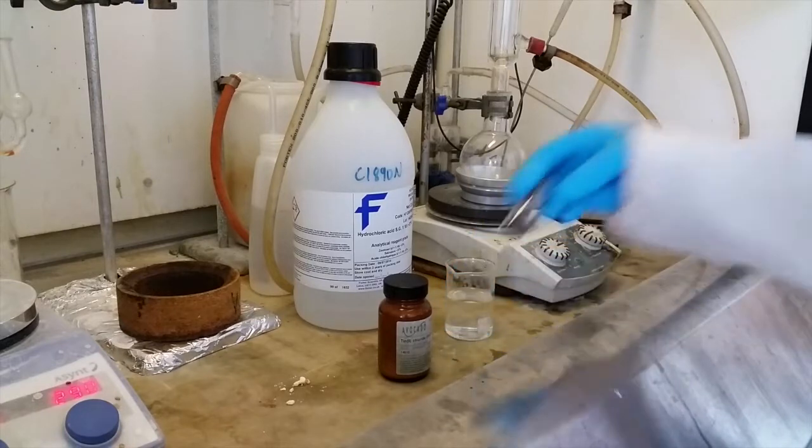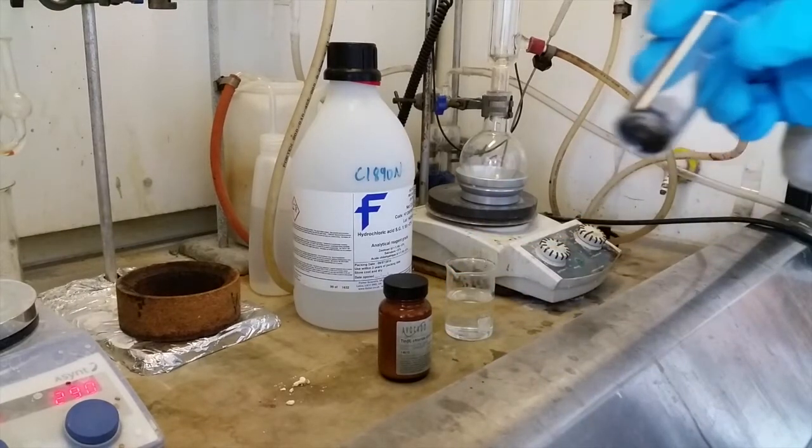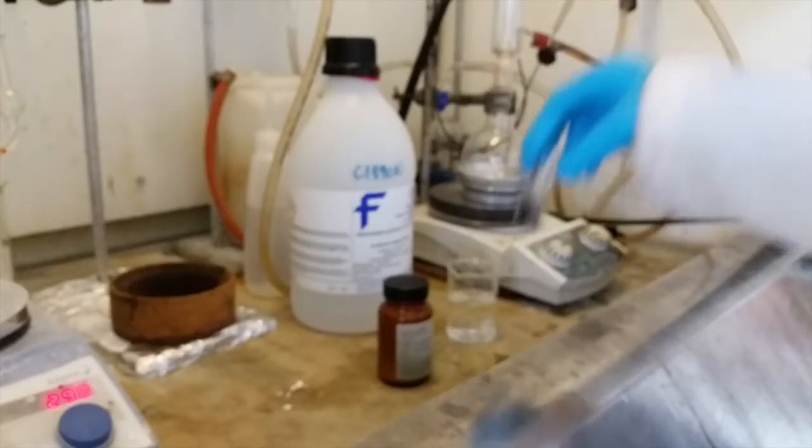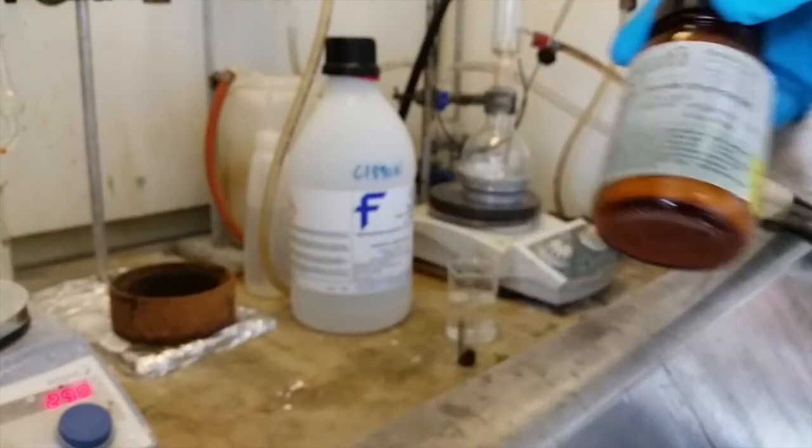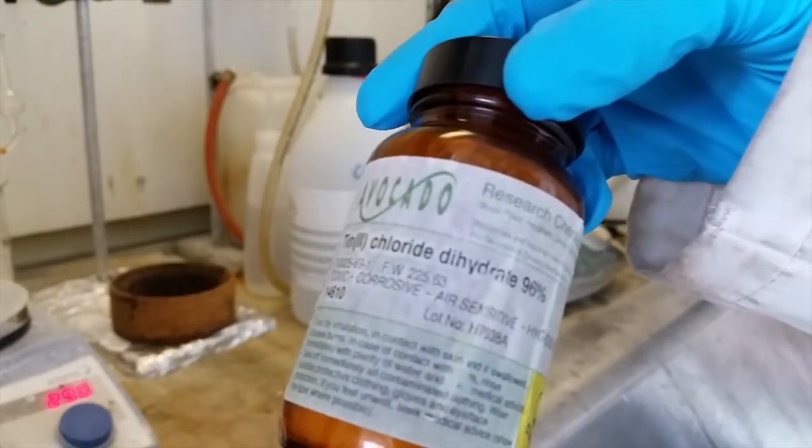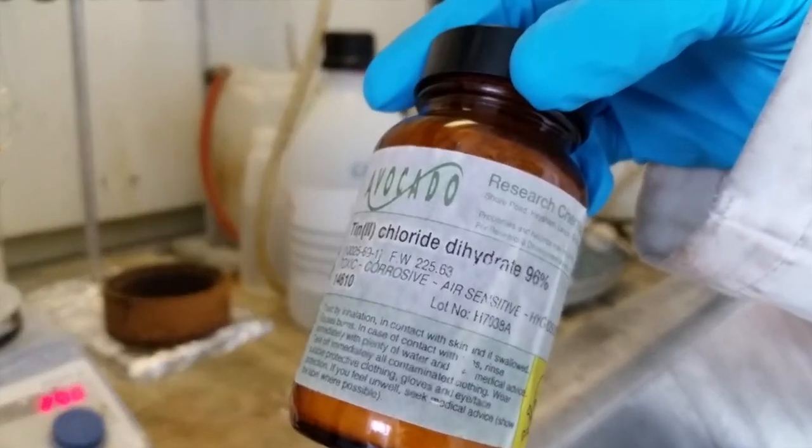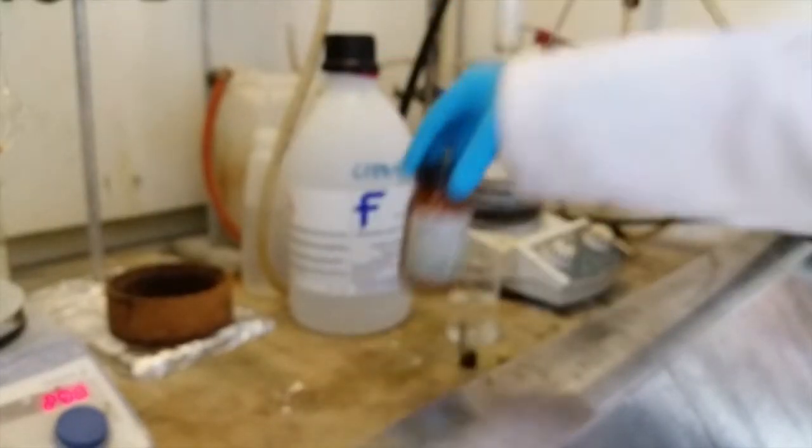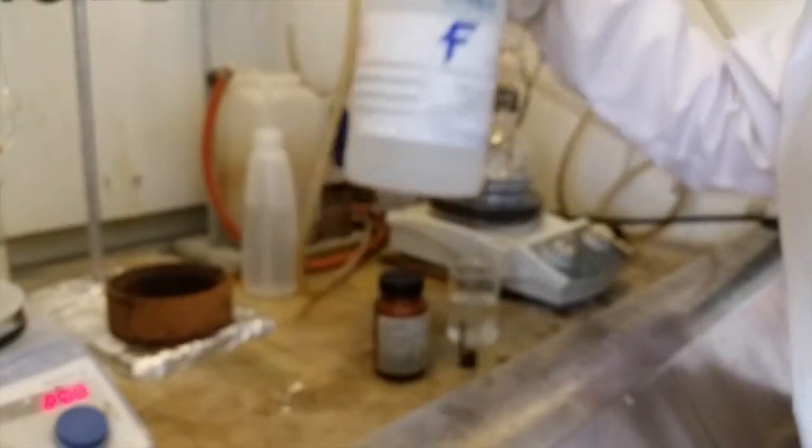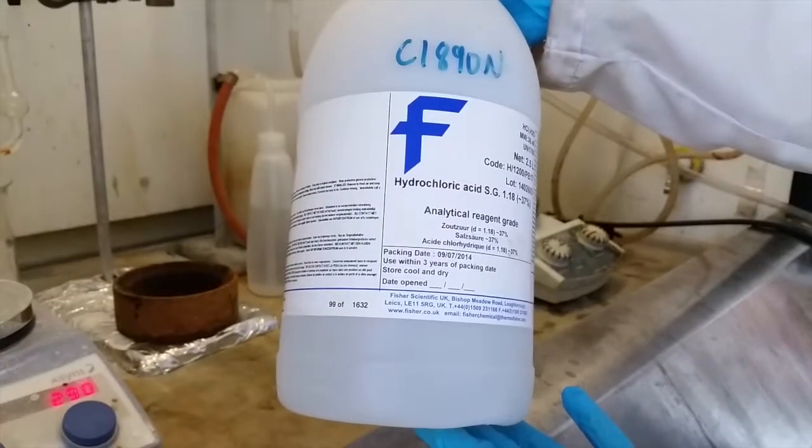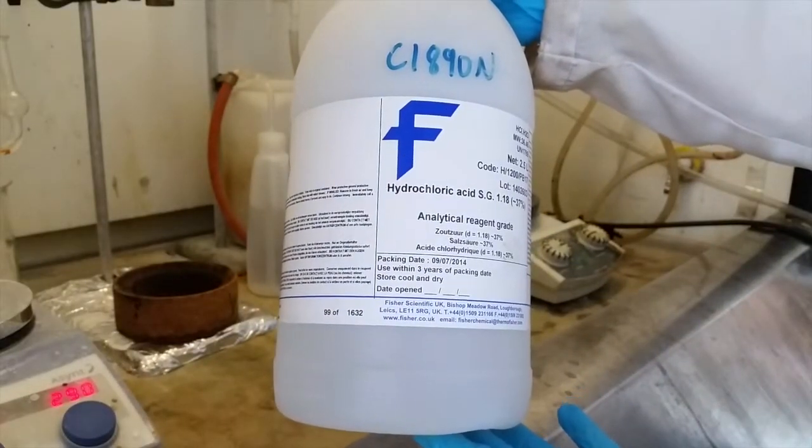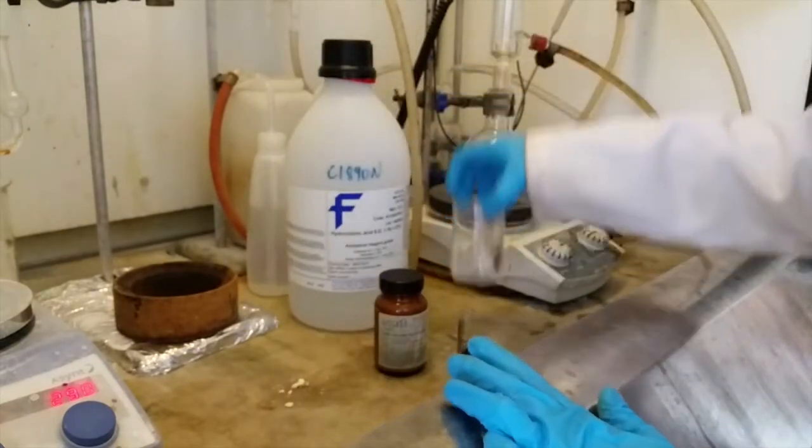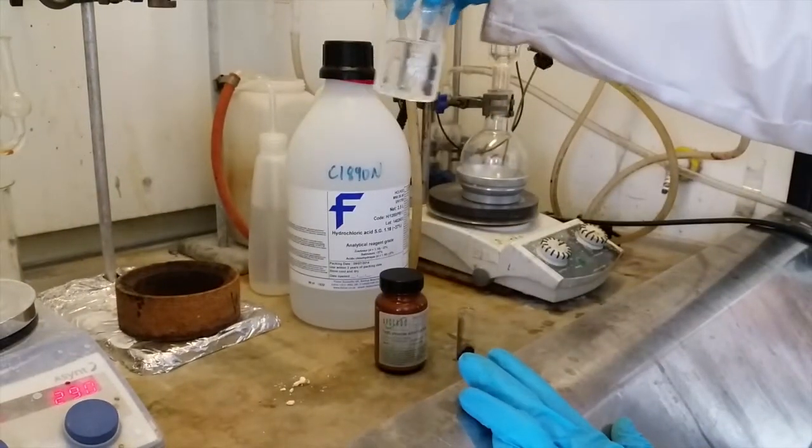In order to do this reaction you will need the nitrated TPP-NO2 porphyrin which you made last time. You will also need some tin 2-chloride dihydrate and finally you will need some 12-molar HCl. This reaction requires 6-molar HCl so you will also need some water in order to dilute this HCl.